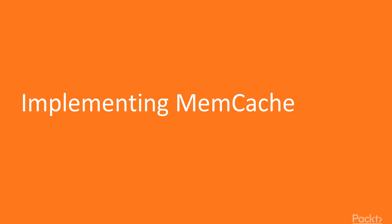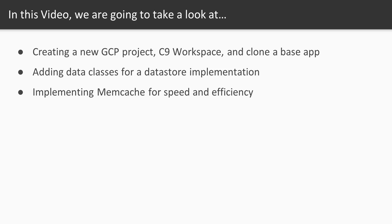Instead of a REST API type of app, this will be a web app based on Servlet and JSP technology. We will need a new GCP project and integrated Cloud9 workspace for coding our app. We can then clone a new base web app project into our workspace to kickstart our code, get our data classes in place so we can query for our app's data, and then get memcache working so our app performs well in the cloud and runs on App Engine as efficiently as possible.